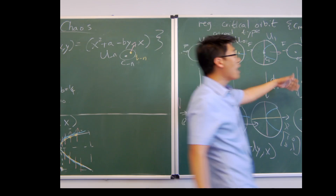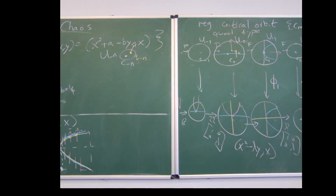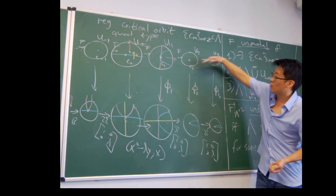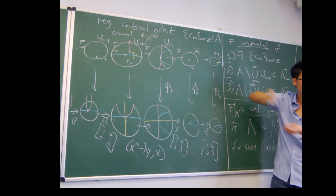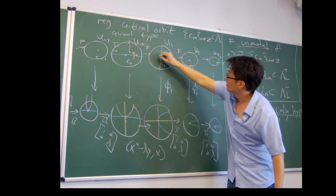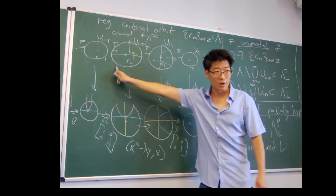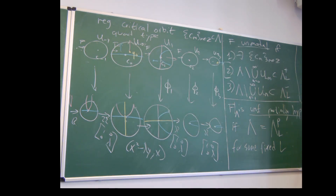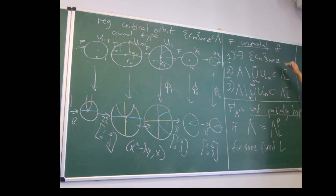Similarly, for backward regularity: if you're too close to the future of the critical value, being backward regular means there has to be a nice center direction aligned with horizontal so it doesn't expand wildly going backward. But if you come here with this horizontal direction and iterate one more time backward, it would point up — and then it's no longer backward regular. These are the obvious obstructions to regularity when you have a critical orbit. We say the map is unimodal if that's the only obstruction to regularity.